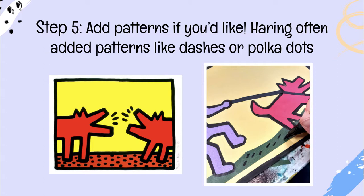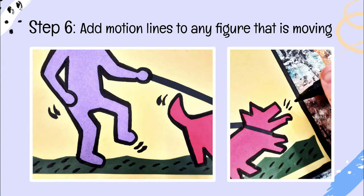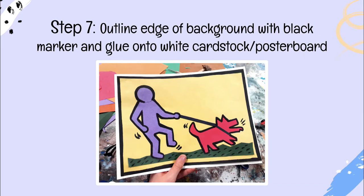Draw along the outside edge of the figure or subject with your marker. Add patterns if you like — Haring often added dots or dashes. He would also add lines to show movement within his figures, like the bark coming out of the dog's mouth in the picture here. Add motion lines to any figure that is moving. Finally, outline the edge of the background with black marker and glue your construction paper onto white cardstock or poster board, then outline that edge as well.